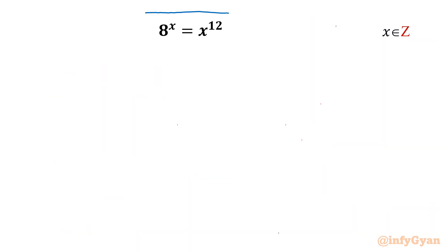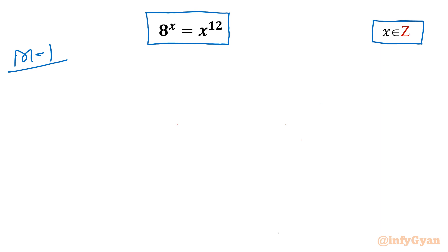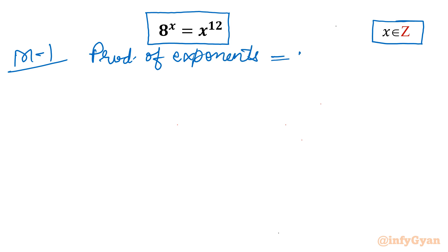Now let us consider the second challenging equation. It is an exponential equation on the left-hand side and an algebraic equation on the right-hand side, with x restricted to integers. For method number 1, I will use exponent properties. The product of exponents on both sides is 12x — the right-hand side power is 12 and left-hand side power is x.